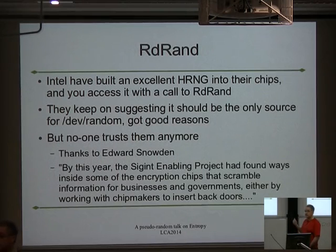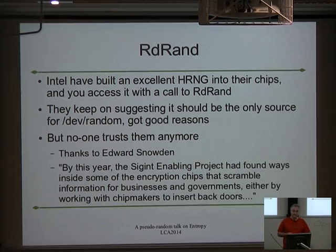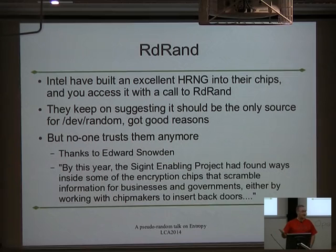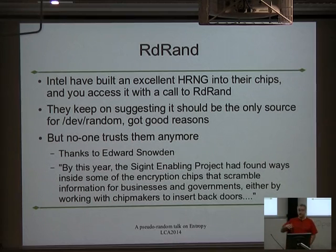RDRand has had a lot of talk because it came out from Snowden — that's the Intel on-chip hardware random number generator. Its design is wonderful; it does an excellent job of collecting very high quality entropy. Theo at OpenBSD never trusted it 10 years ago — he was happy implementing it but didn't trust anything, quite rightly. FreeBSD, on the other hand, trusted it completely. They said if we have one of these things, we're going to use it as the sole source.